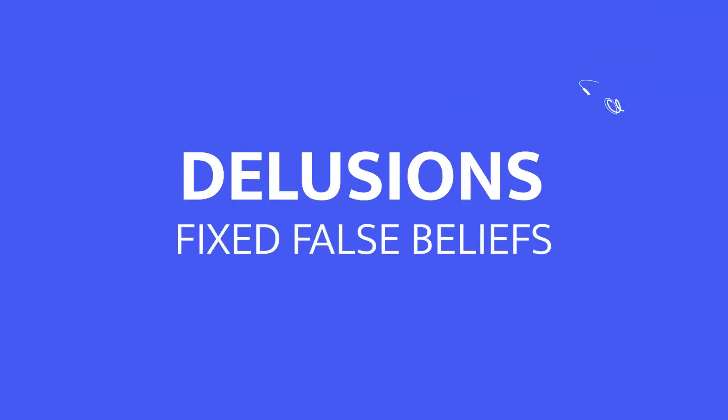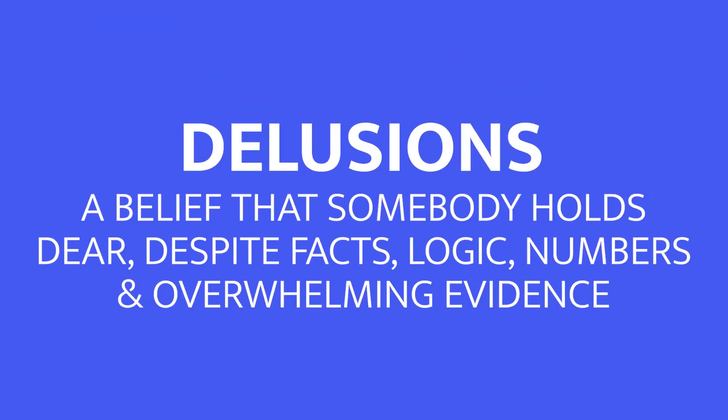Now let's go on to delusions. Delusions are defined as fixed false beliefs — that's what the textbook says. But another way of putting it: a delusion is a belief that somebody holds dear despite facts, logic, numbers, and overwhelming evidence. They believe that what they say is true even though it's very unlikely or implausible to be true.